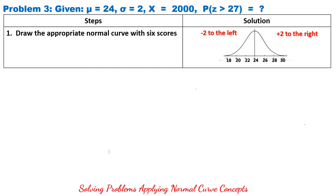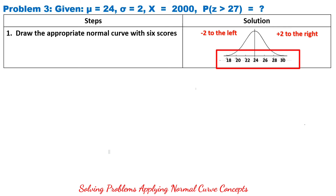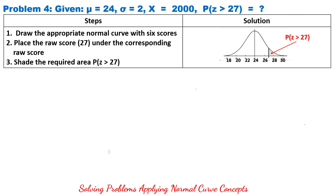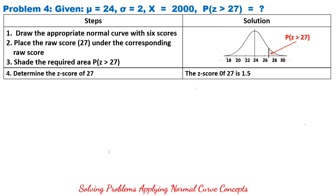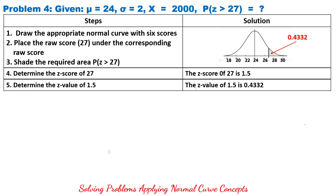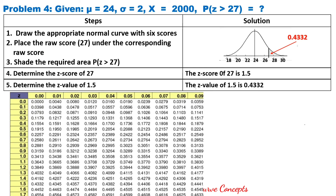Step 1: draw the appropriate normal curve with 6 scores. Since the mean is 24, write 24 corresponding to 0. With standard deviation of 2, add and subtract 2: the 6 scores are 18, 20, 22, 24, 26, 28, and 30. Step 2: place raw score 27 and shade the required area to the right of 27. Using the formula, the Z-score of 27 is 1.5. From the Z-table, Z equals 1.5 corresponds to 0.4332.